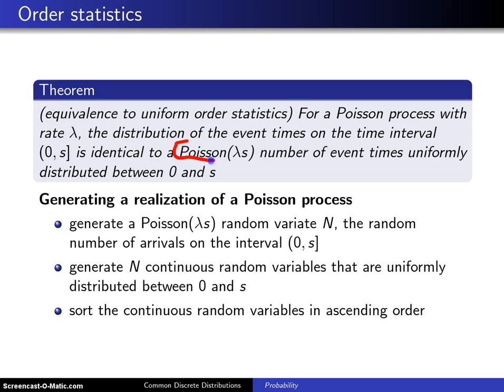Keep in mind that this right here is a random number of event times, and those turn out to be uniformly distributed between 0 and s. This means that there is a second algorithm that can be used to generate a realization of a Poisson process, and it works like this.